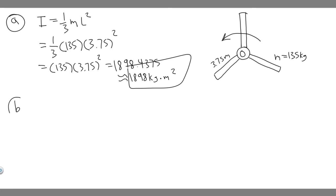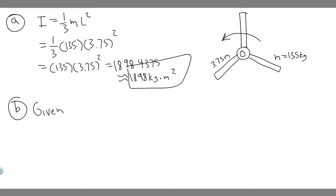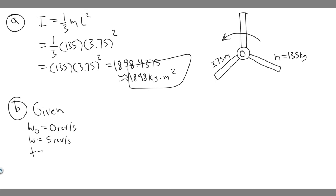Let's move on to Part B. Part B wants us to find how much torque the motor must apply to bring the blades from rest up to a speed of 5 revolutions per second — so we're solving for torque. Let's write down our givens: the initial angular velocity is zero revolutions per second (starting from rest), the final angular velocity is 5 revolutions per second, and the time is 8 seconds. Torque is what we're solving for.